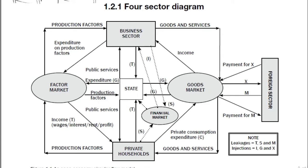The circular flow model demonstrates how money moves through society. Money flows from producers to workers as wages and flows back to producers as payment for products. The circular flow model of an open economy shows the workings of an economy that is open to foreign trade. The only thing that makes it different from closed economies is that it includes the foreign sector. South Africa is the best example of an open economy because we trade with other countries of the world.